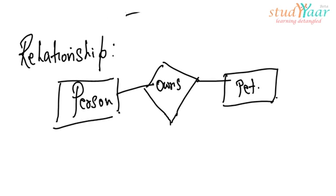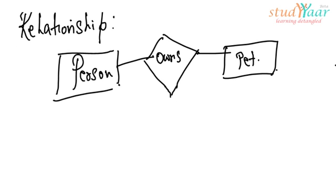These types of interactions we abstract into relationships. So our entity-relationship model is basically comprising of entities, which we have already seen, and interaction between these entities called a relationship. It is an association between entities.